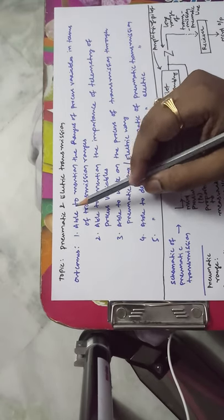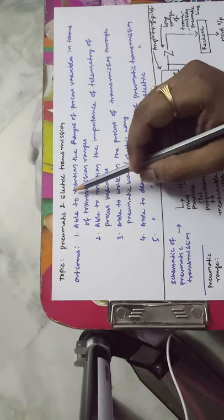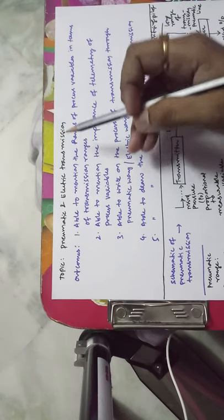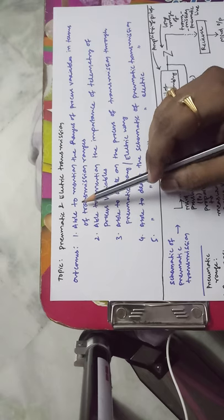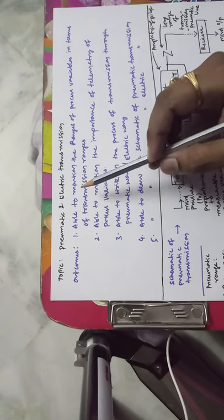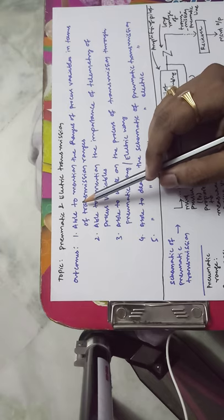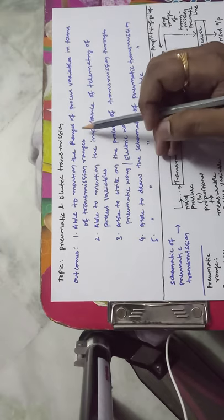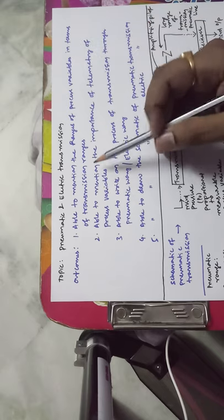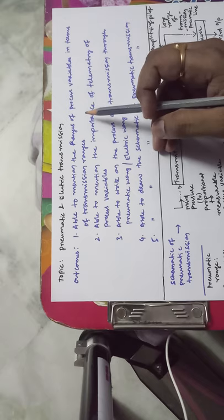Hello students. The topic I am going to discuss is based on pneumatic and electrical transmission. The outcomes of this topic are as follows: after completion, the student will be able to mention the ranges of process variables in terms of transmission ranges — that is, in terms of pressure, voltage, or current.